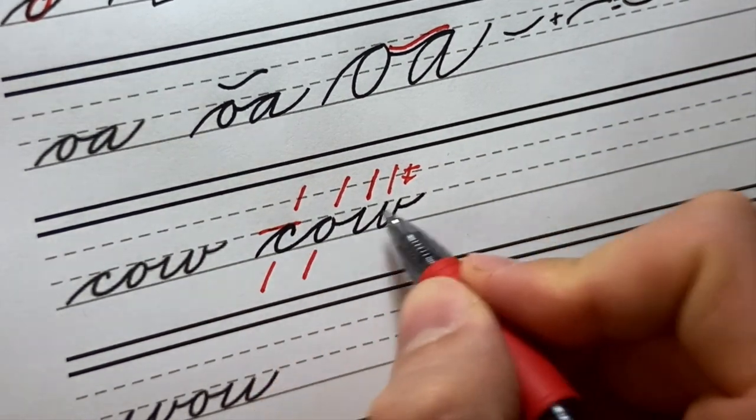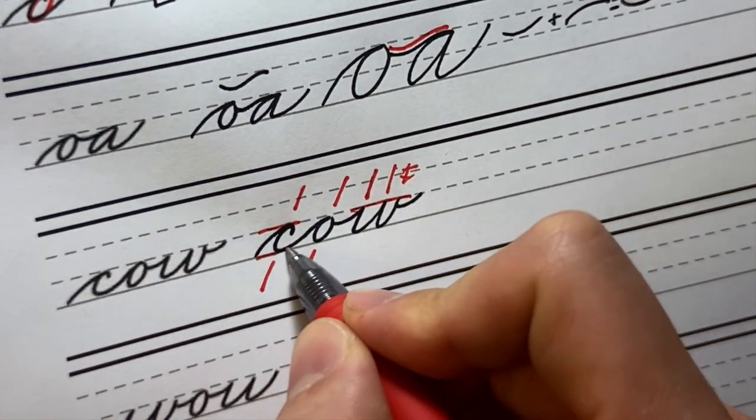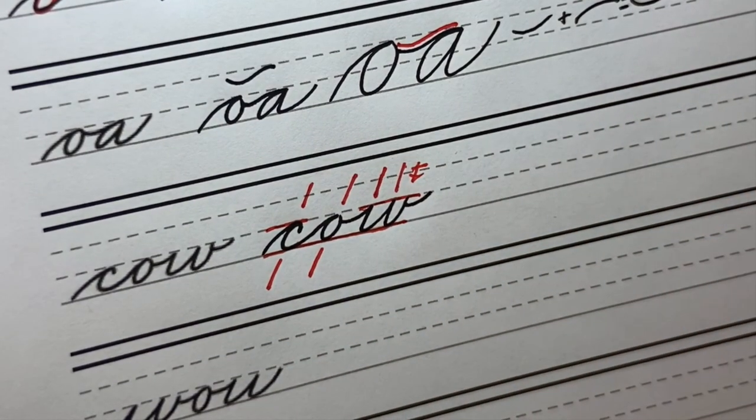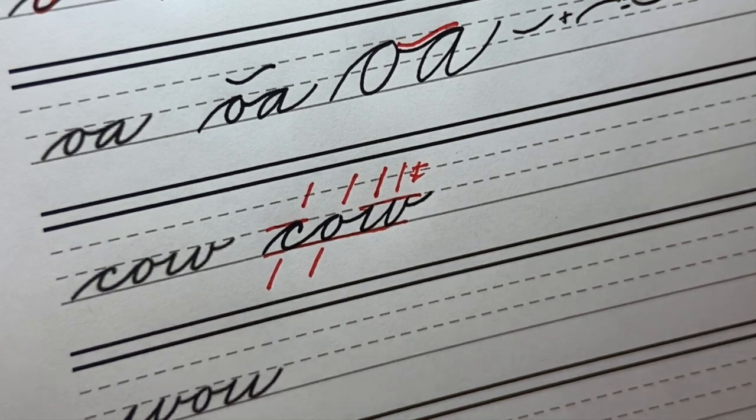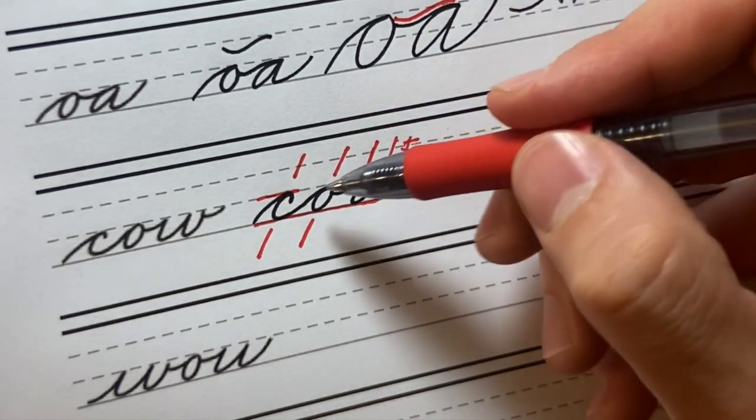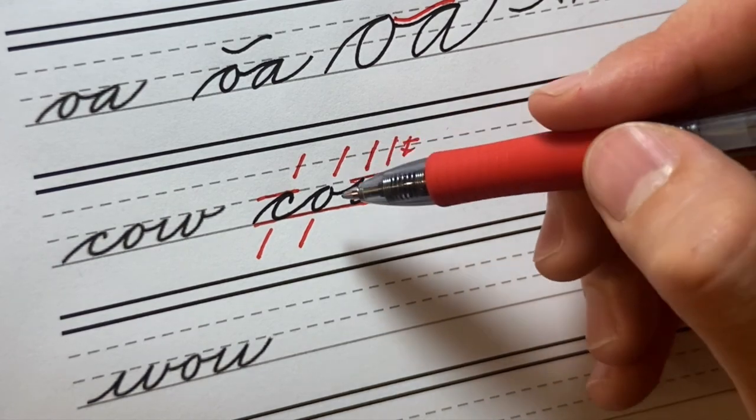And then of course we're hitting the X heights, always looking for that hitting the baseline. I want to keep everything in that space. I always want that uniformity of size, the spacing between these letters.